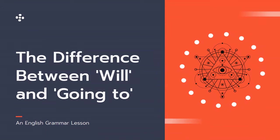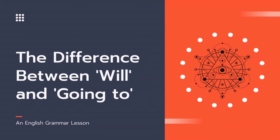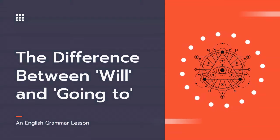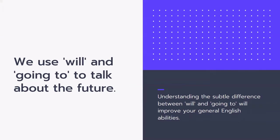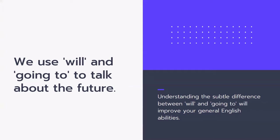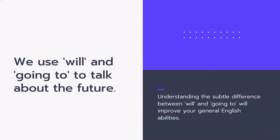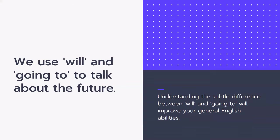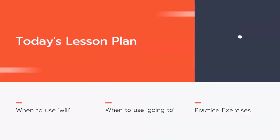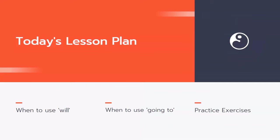It's quite difficult to know the difference between 'will' and 'going to,' and many people get confused about this. In today's English grammar lesson, we're going to explore the difference between will and going to, which are both used to talk about the future. Understanding the subtle difference will improve your general English abilities, make you sound more like a native speaker, and help you understand people's meanings. In today's lesson, we're going to cover when to use will, when to use going to, and at the end do practice exercises.